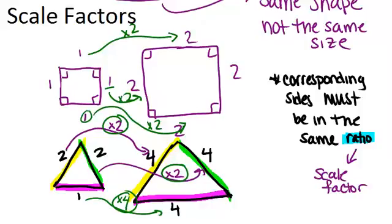Another property of similar polygons is that all their corresponding angles will be congruent. And this is because in order for the two shapes to be actually the same shape, the angles have to be the same.